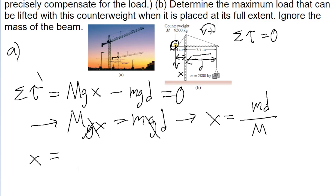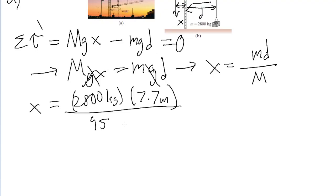Just for part A, I should note. So small m is given to us as 2,800 kilograms. Okay. Multiplied by that particular lever arm, which is 7.7 meters. And then this is all divided by 9,500 kilograms. Probably scroll down a little bit. 9,500 kilograms. Put this into a calculator, and we find a value for x of about 2.3 meters. So that is our answer to part A of the problem.